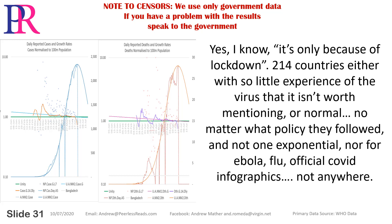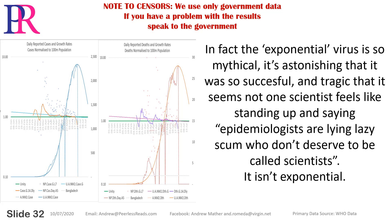Yes, I know — it's only because of lockdown. 214 countries, either with so little experience of the virus that it isn't worth mentioning, or normal — no matter what policy they followed — and not one exponential. Not for Ebola, flu, official COVID infographics, not anywhere. In fact, the exponential virus is so mythical, it's astonishing that it was so successful, and tragic that it seems not one scientist feels like standing up and saying epidemiologists are lying lazy scum who don't deserve to be called scientists. It isn't exponential.